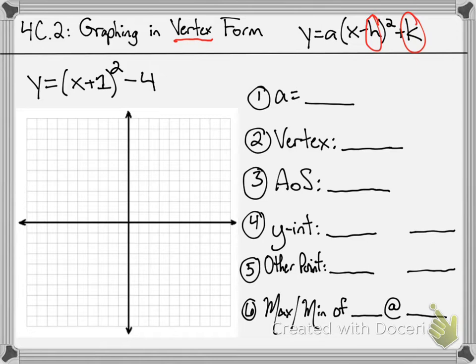But once we find that vertex, we are going to find all the same information we found before: our axis of symmetry, find a couple of pairs of points, establish if there's a maximum or minimum. So let's go ahead and take a look here at this first example: y equals x plus 1 squared minus 4.